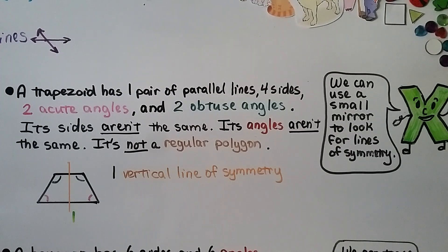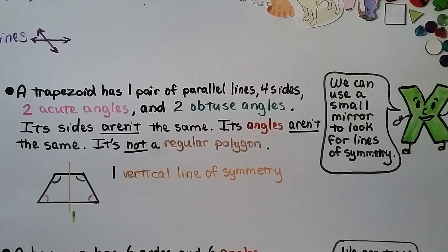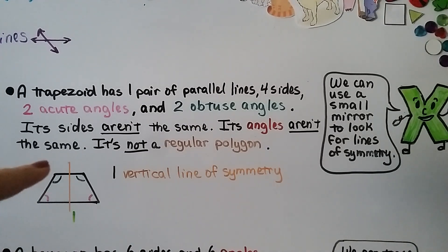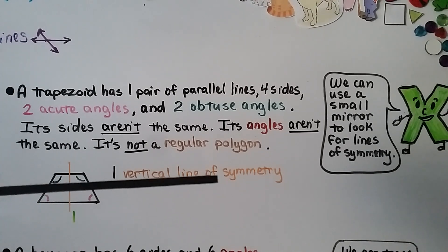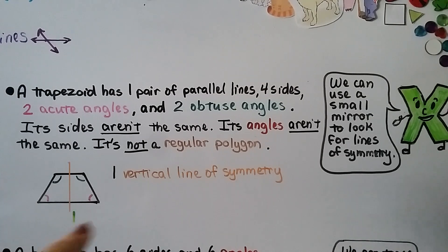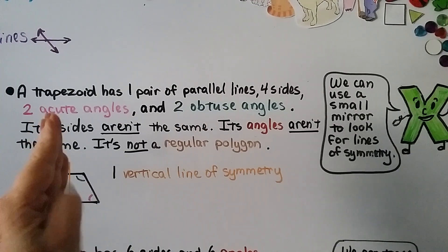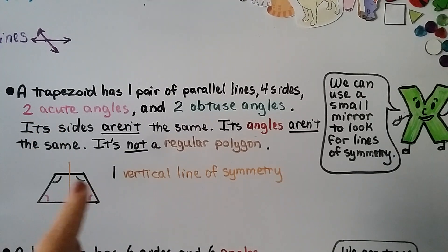A trapezoid has one pair of parallel sides, four sides, two acute angles, and two obtuse angles. Its sides and angles aren't equal, so it's not a regular polygon. It has one vertical line of symmetry. A horizontal fold shows the top part is too small to mirror the bottom, and a diagonal fold moves a vertex too far out of position. We can also use a small mirror placed on a shape to look for lines of symmetry.